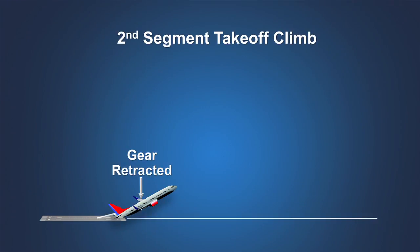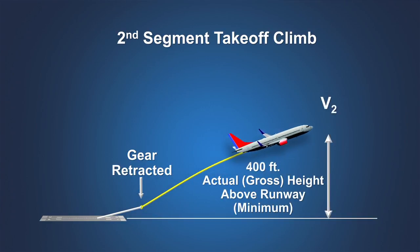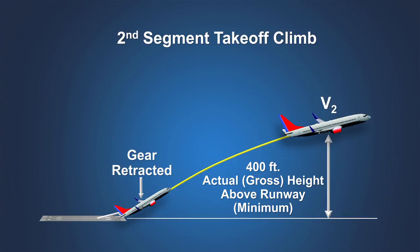The second segment must continue to a minimum height of 400 feet above the runway surface. No changes are allowed to the airplane's configuration or thrust while maintaining a speed not less than V2. The climb gradient during the second segment will gradually diminish due to thrust decrease resulting from increasing true airspeed and reduced air density as the airplane gains height. Therefore, the climb gradient capability will be greatest at the beginning of the second segment.